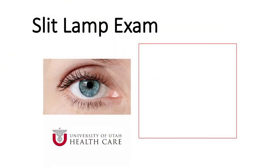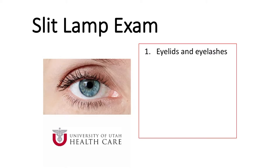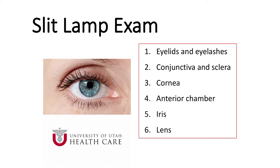Now that we have introduced the slit lamp, let's discuss the actual eye exam. Though there are numerous techniques and approaches to the exam, we want to give you a basic framework to begin with by breaking down the exam into several easy-to-remember steps. The first step is the examination of the eyelids and eyelashes. The next step involves evaluation of the conjunctiva and sclera. Next, the cornea is examined followed by the anterior chamber, iris, and lens.